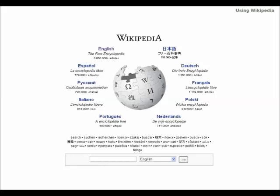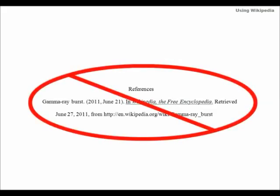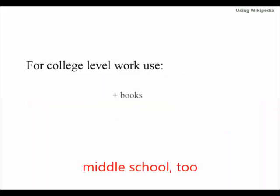Do you know that you can use Wikipedia when doing academic research? You shouldn't cite Wikipedia as a source in your research paper. And no, it's not because Wikipedia is a bad source for information. The reason you shouldn't use it as a source for your paper is that it is just an encyclopedia. College-level work requires more sophisticated source materials, such as books and journal articles.